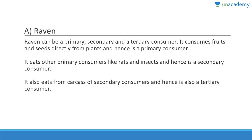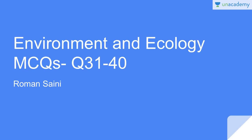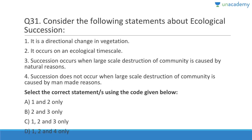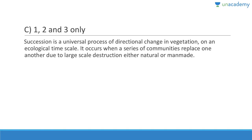Let us discuss questions 31 to 40. Question thirty-one: Consider the following statements about ecological succession. It is a directional change in vegetation — correct. It occurs on an ecological time scale — correct. Succession occurs when large-scale destruction of communities is caused by natural reasons — correct. Succession does not occur when large-scale destruction is caused by man-made reasons — not correct. Answer is C, one, two, and three. It can be caused by either natural or man-made reasons.